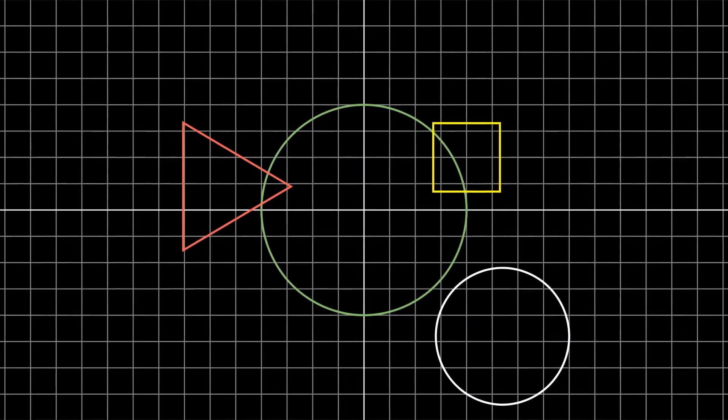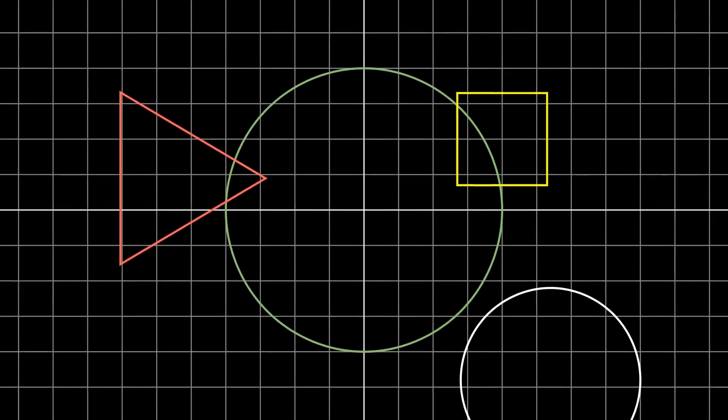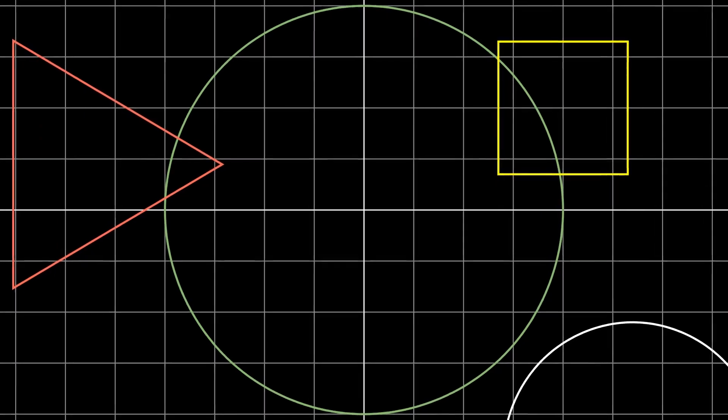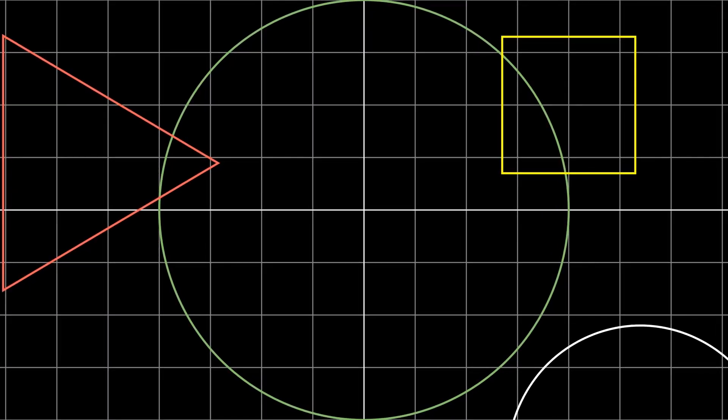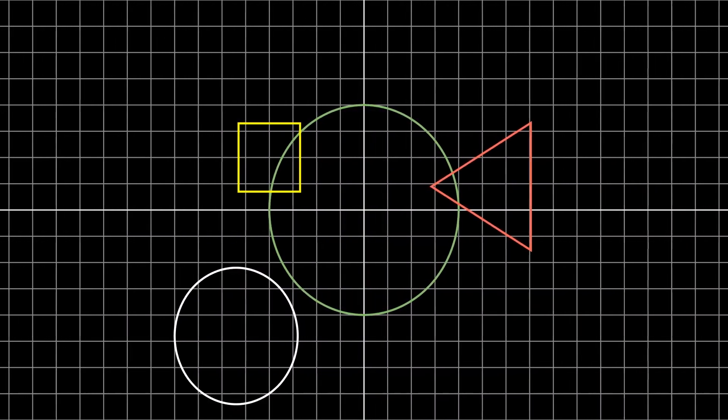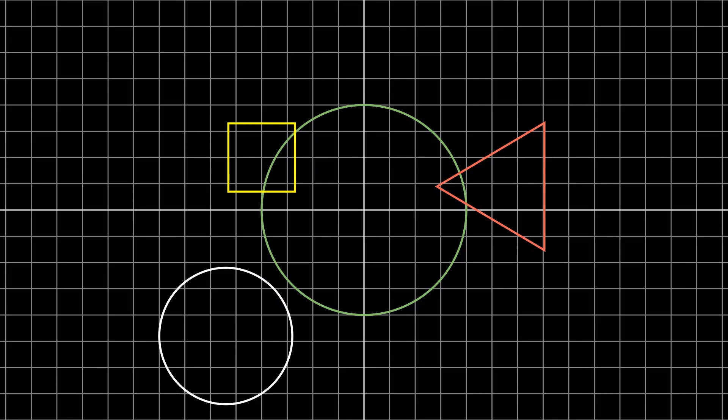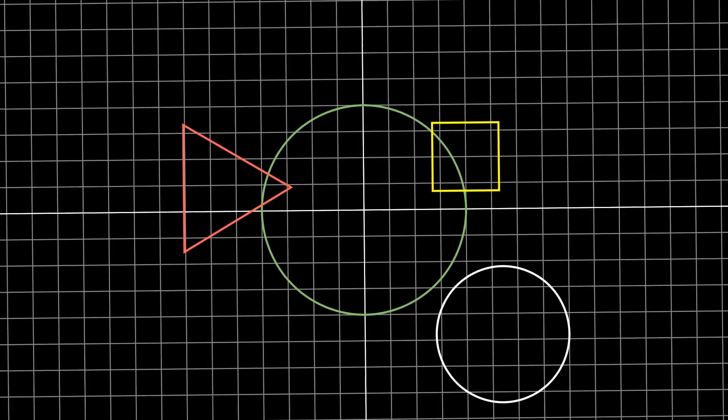Most people are familiar with linear transformations like dilation, otherwise known as zooming in and out, or perhaps you've seen reflection, like this reflection about the y-axis. Another common transformation is rotation about a point, like this rotation about the origin.